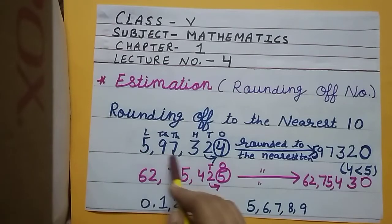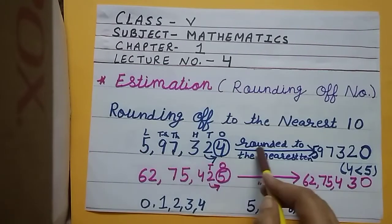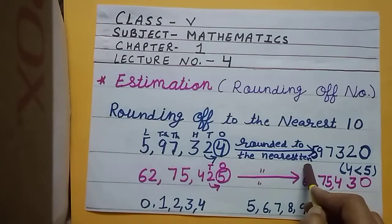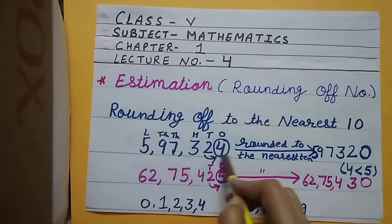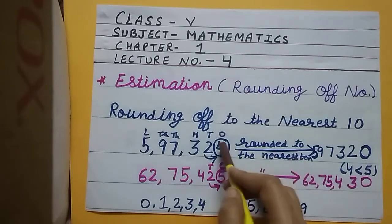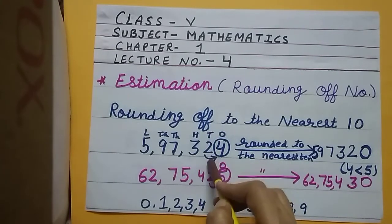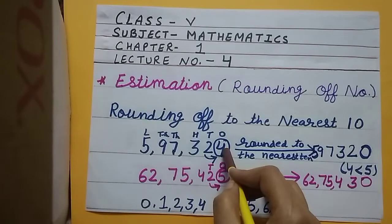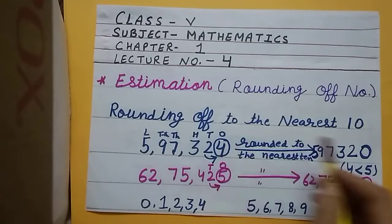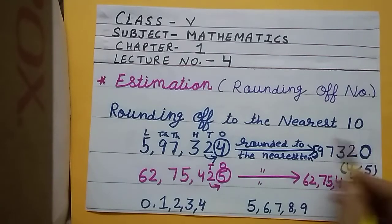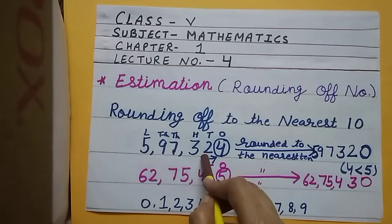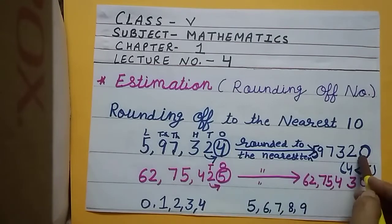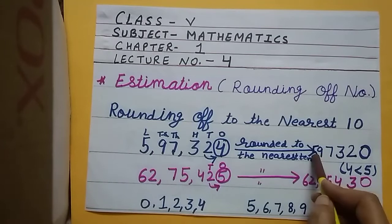Let's understand with an example. The given number is five lakh ninety seven thousand three hundred twenty four. Round off to the nearest ten. Look at the ones place and circle it. The digit is 4, which is less than five, so it will become zero and there will be no change on the tens place. Remaining places will be as such.